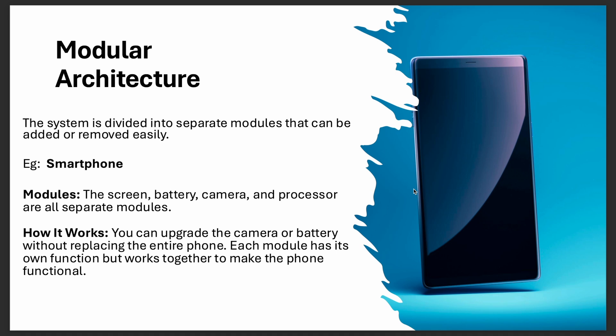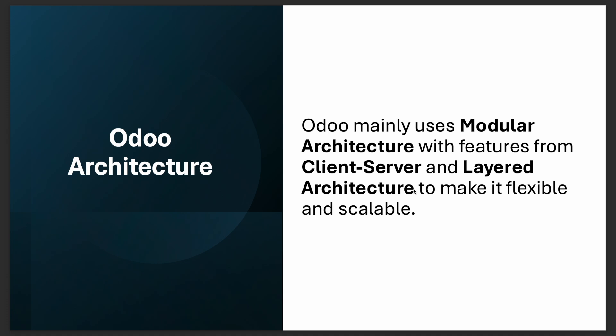The last type is modular architecture, where the system is divided into separate modules that can be added or removed easily. Think of a smartphone — it has modules like a screen, battery, camera, and processor. You can upgrade the camera or battery without replacing the entire phone. Each module has its own function but works together to make the phone functional. That's modular architecture.